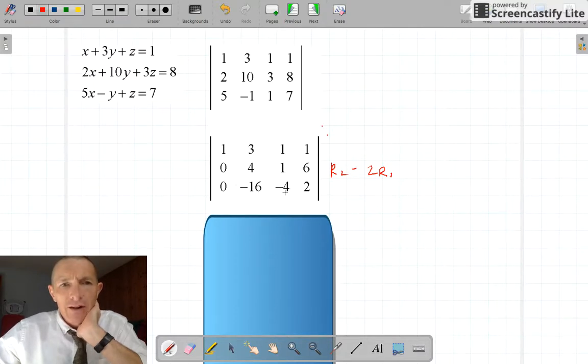And I also want to get a 0 here, so I take row 3 in the original one, and I take away 5 lots of row 1. So that take away 5 lots of 3, and that take away 5 lots of 1 gives me minus, that take away 5 is 2.